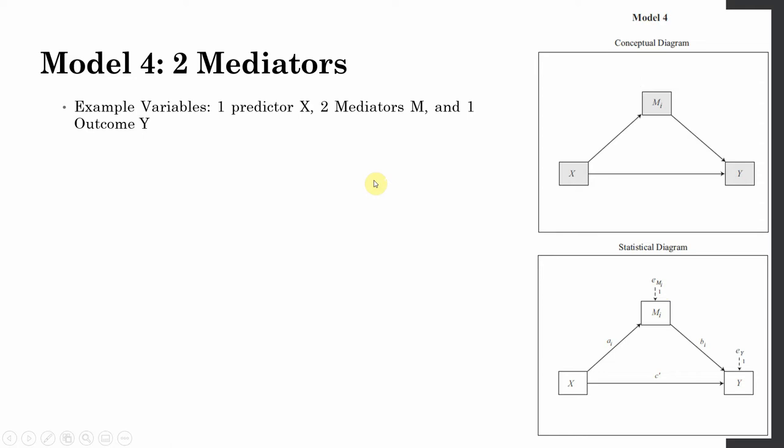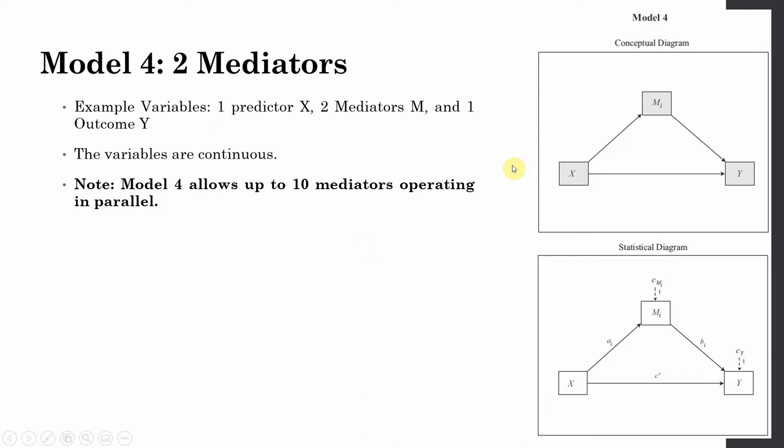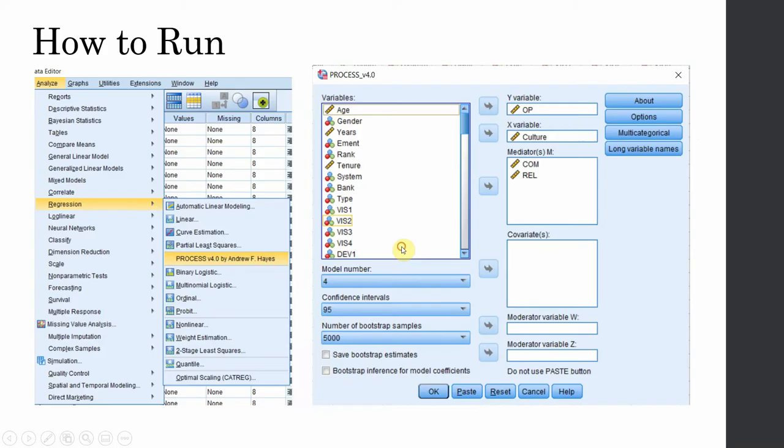This is the conceptual diagram and the statistical diagram showing the paths as described. You have one predictor, two mediators, and one DV — all continuous variables. Model four can allow up to 10 mediators operating in parallel. In this example I am using two mediators, but you can go up to 10.